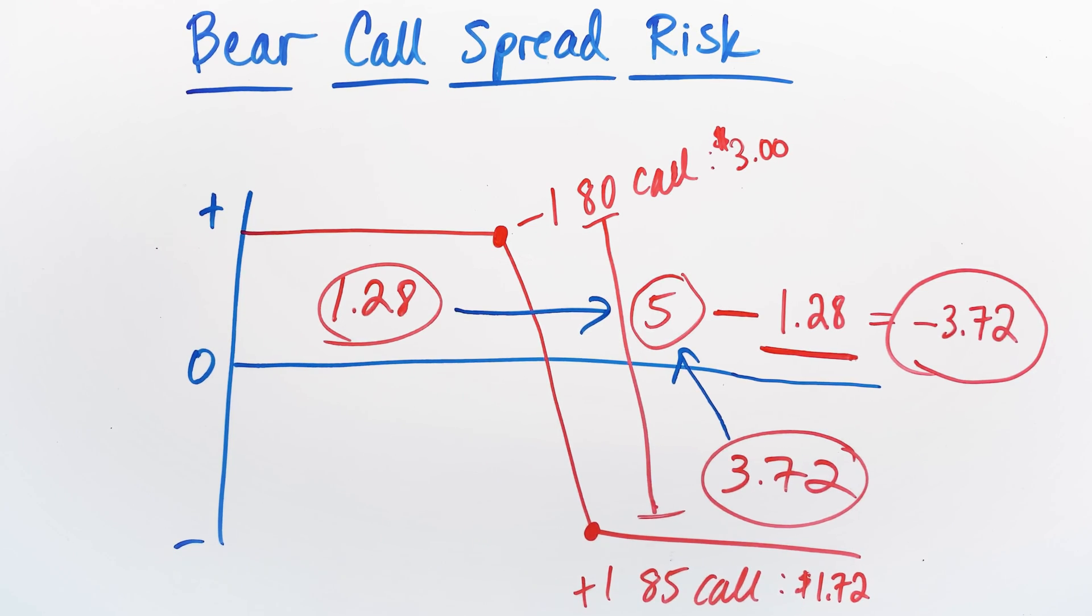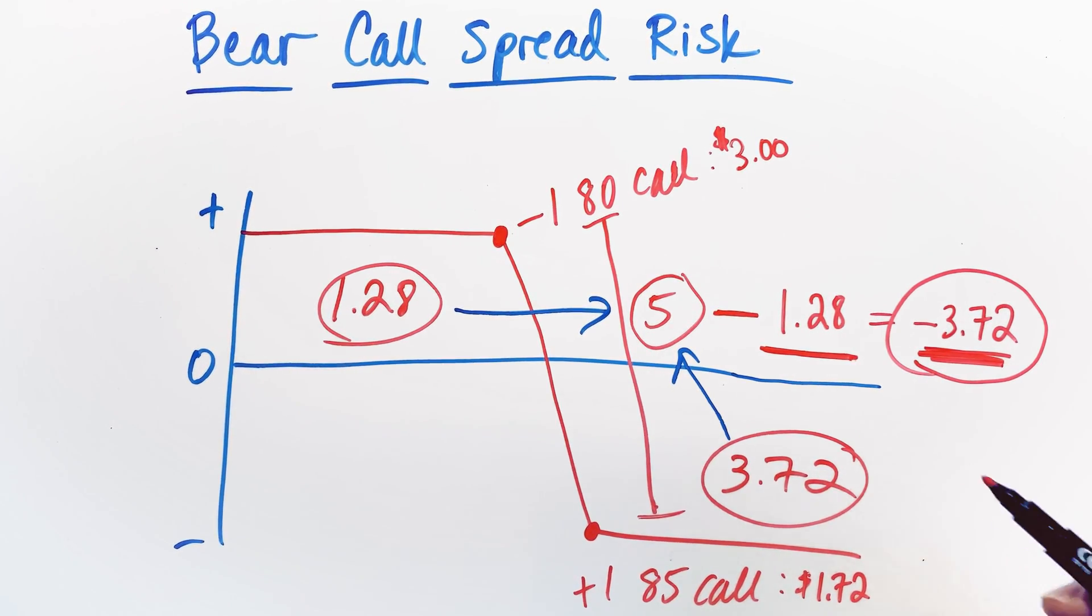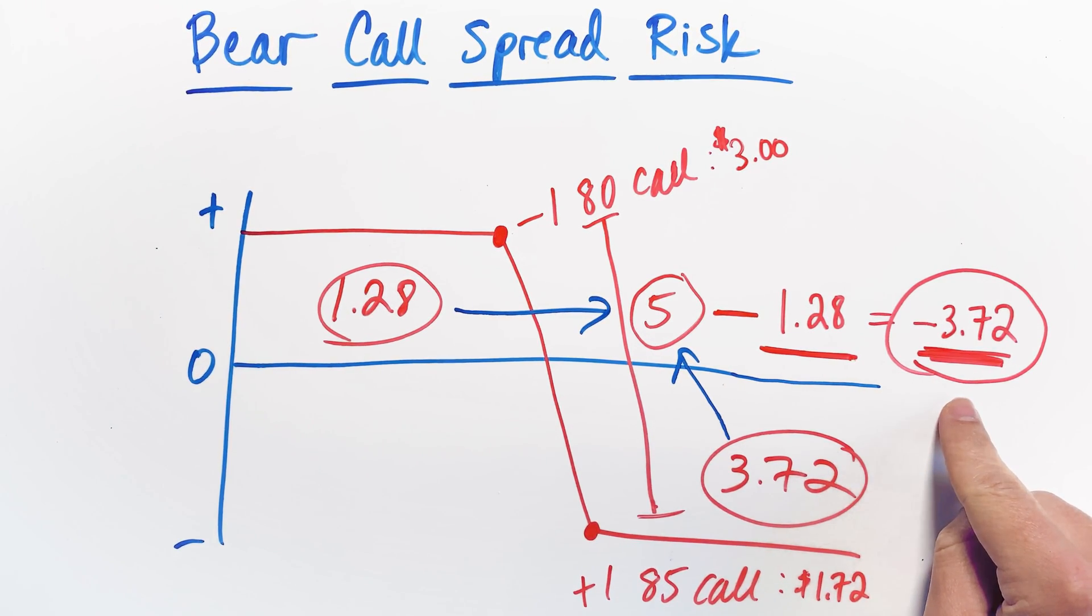So naturally, this is a really easy way to calculate how much risk is inherent in a position that you're trading. And it's really important that you do that because you need to understand how much risk each individual contract that you're trading as far as bear call spreads is taking from your account. Because that's the number that could really hurt you if you get into a position where the stock goes against you and the trade doesn't work out the way you thought it was going to work.